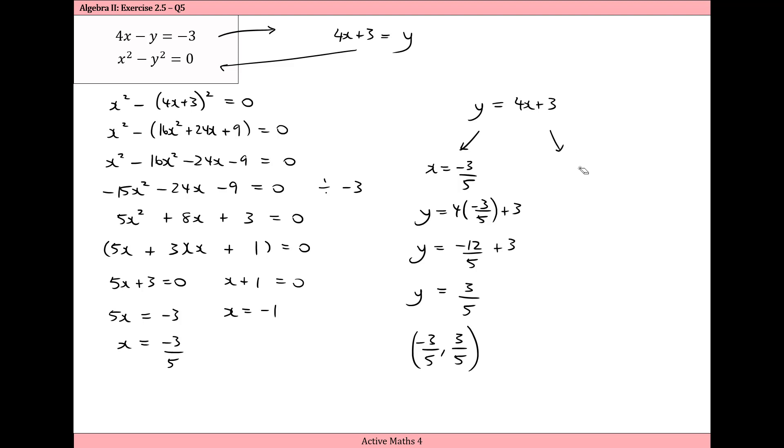Now we're going to sub in x equals minus 1. And we have y equals 4 times minus 1 plus 3. y is equal to 4 times minus 1 is minus 4 plus 3. So y is equal to minus 1. And so when x is minus 1, y is minus 1. And these are the two sets of solutions. Minus 3 over 5, 3 over 5, and minus 1, minus 1.